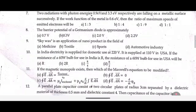Eighth one: The barrier potential of a germanium diode is approximately dash. Ninth one: Skywax is an application of the nano product in the field of dash.